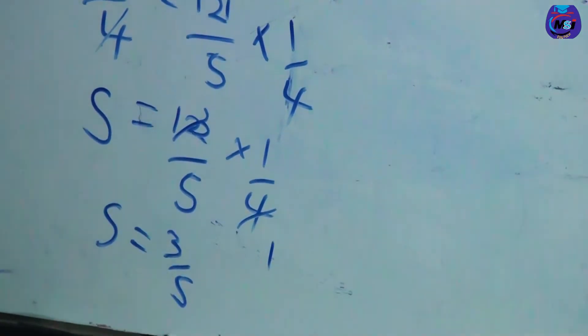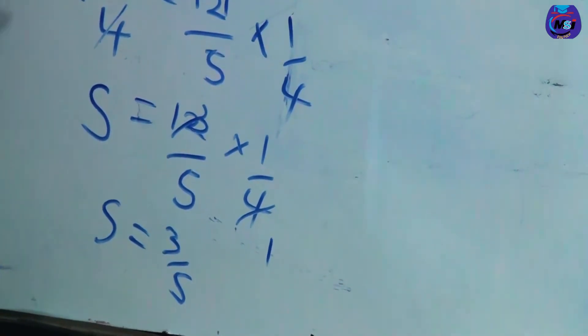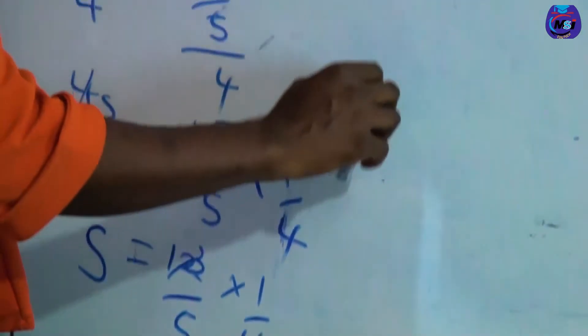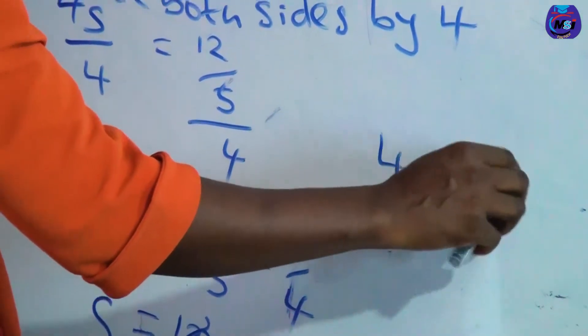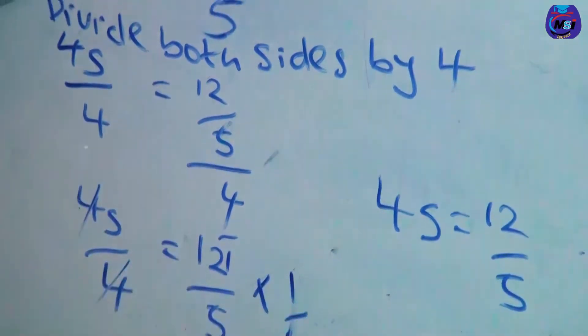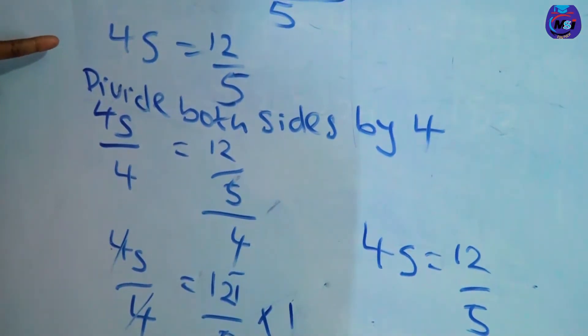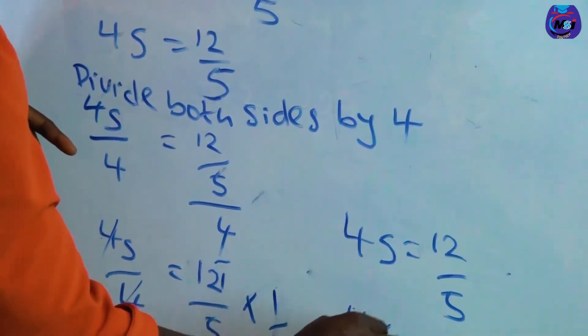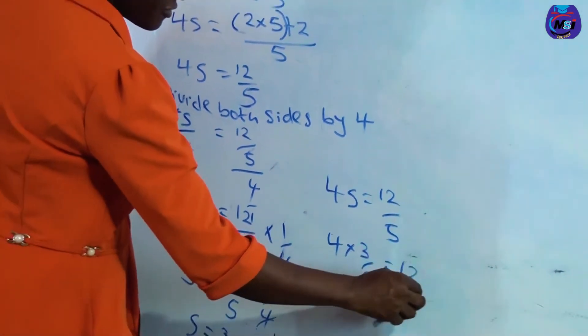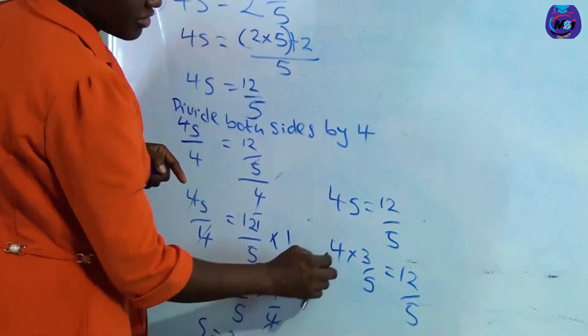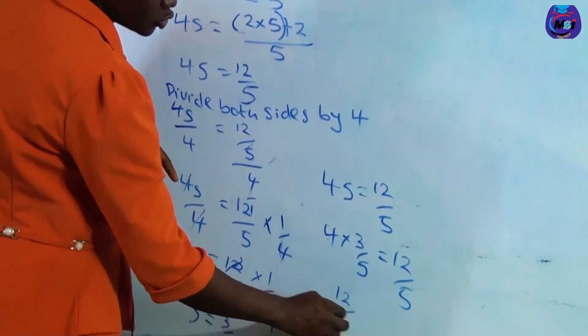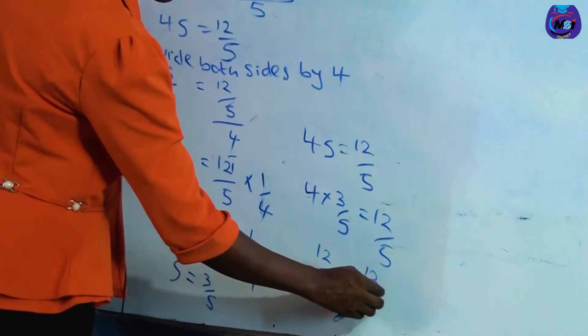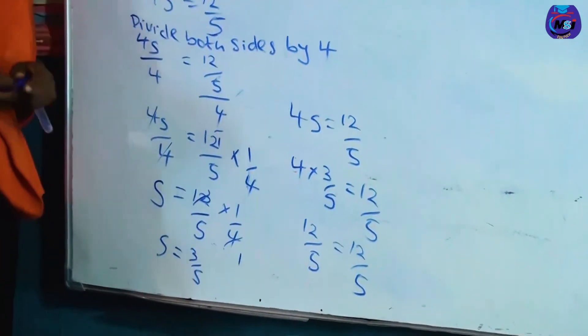Now we can check if our answer is correct. The question from here, 4x equals 12 over 5. If x is actually 3 over 5, it implies that 4 times 3 over 5 gives us 12 over 5. So 4 times 3 is 12, 12 over 5 equals 12 over 5. So we are correct.